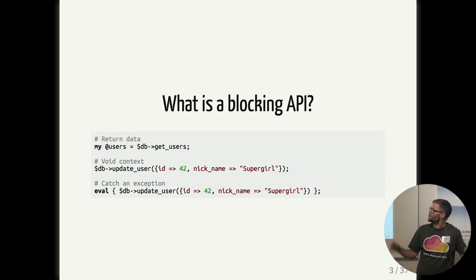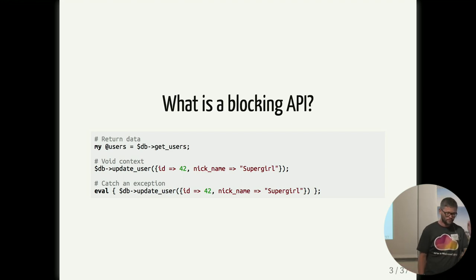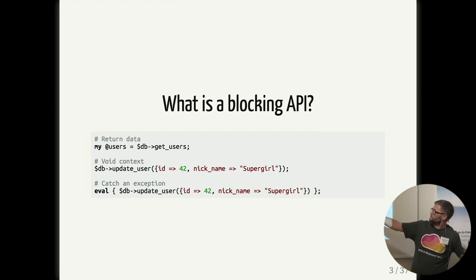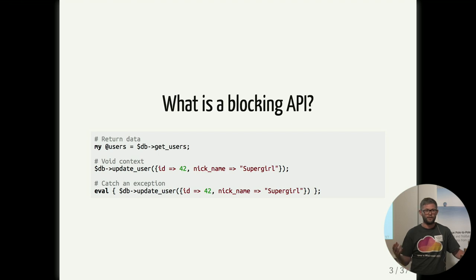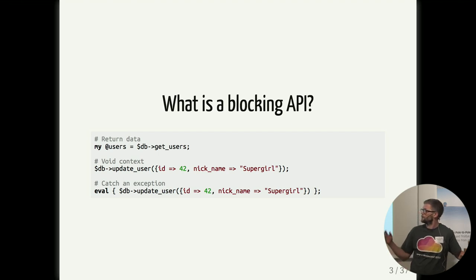So first, what is a blocking API or a blocking method? I guess everybody has used this before. The idea is that you call some method and your program stops on that line. Whatever the method is doing, you don't know if it's taking a long time to receive a document or query a database or whatever, but it's going to stand there for seconds, minutes, hours, or days until it's done.